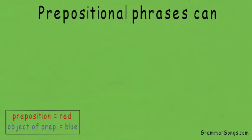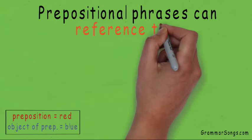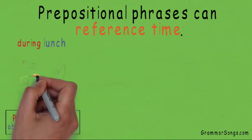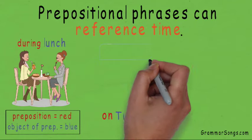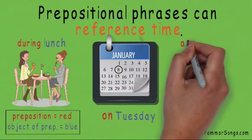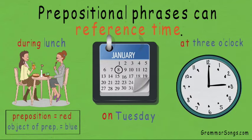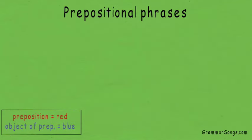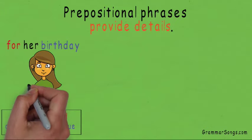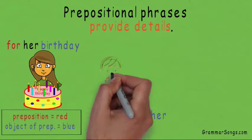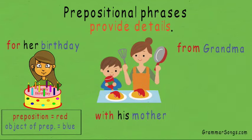Prepositional phrases can reference time, such as during lunch, on Tuesday, and at three o'clock. And sometimes prepositional phrases simply provide details, such as for her birthday, with his mother, or from grandma.